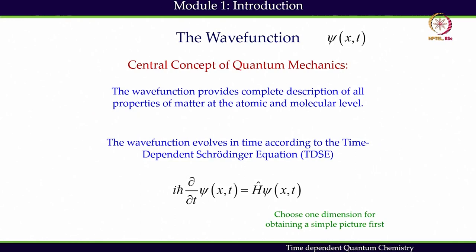Quantum mechanics governs the structure, dynamics, physical and chemical properties of matter at the atomic and molecular level. In quantum mechanics, the wave function denoted by psi(x,t) — for simplicity, we have considered one dimension. Once we understand the one-dimensional problem, we will be able to move on to the three-dimensional problem. To get the fundamental ideas clear, we will continue with one dimension.